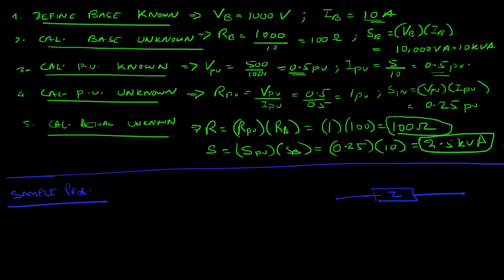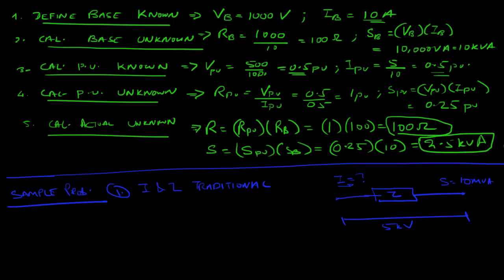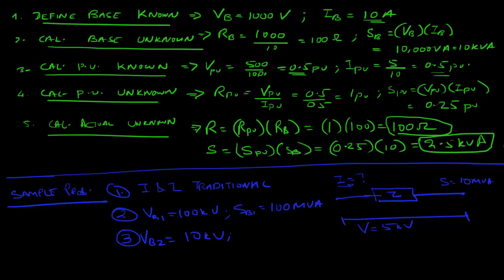The voltage across the circuit is 5 kV and the power is 10 MVA. I want you to do three things: first, solve for I and Z using the traditional technique. Then, using a base of 100 kV and S_base of 100 MVA, solve for I and Z in per unit.